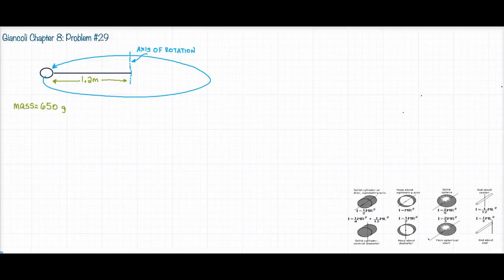So in order to solve this problem, at least for part A, we're going to treat it as a point mass. So we have I equals MR squared, where the mass of the ball was given to us in the problem as 650 grams or 0.650 kilograms. And we know that the distance from the axis of rotation is 1.2 meters, and we have to remember to square that. When we crank that through the calculator, we get 0.94, and the units are kilogram meters squared for part A.